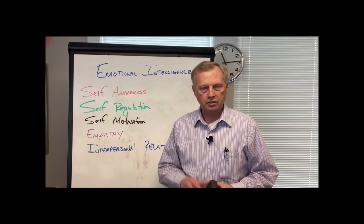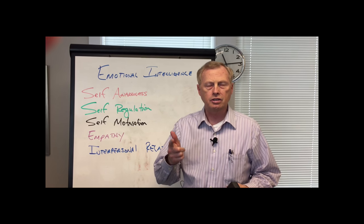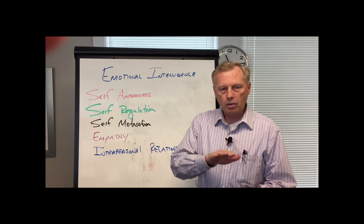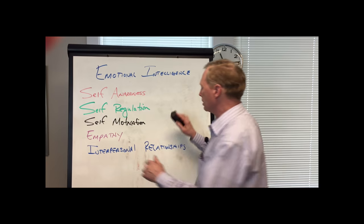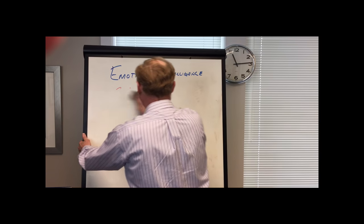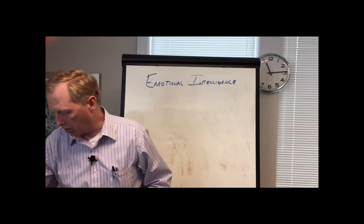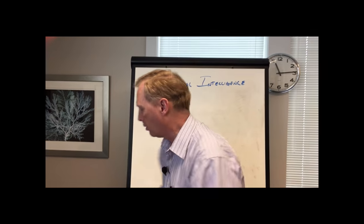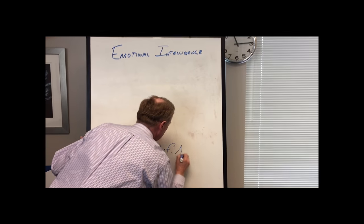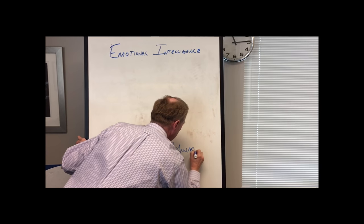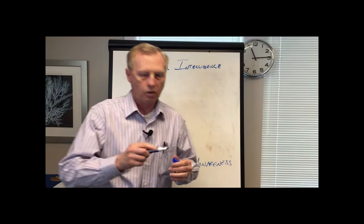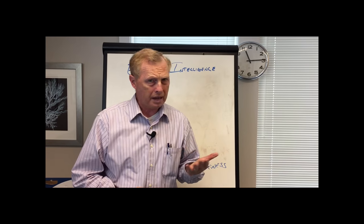Now that we've covered the basic ideas of self-awareness, self-regulation, self-motivation, empathy, and interpersonal relationships, let me walk you through the sequence of how these apply — not only at work, but at home — to get us to where we want to go. We're going to start with self-awareness; it is the most important of all. Self-awareness gives us the ability to recognize what's going on in our space. If we don't know what's going on, how can we correct it? How can we make the changes?